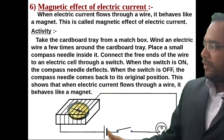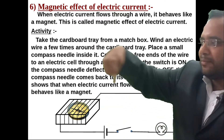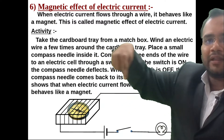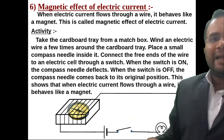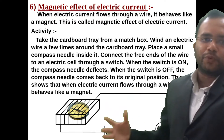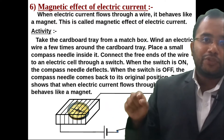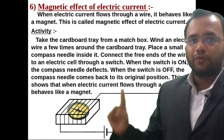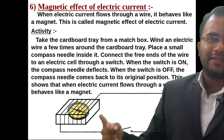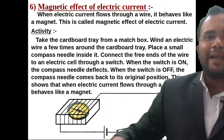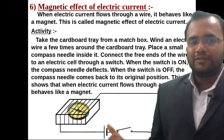When a conductor is carrying current, there is a magnetic field around the conductor. There is a magnetic effect produced by the electric current, but the current must flow through the conductor for the magnetic effect to be produced.